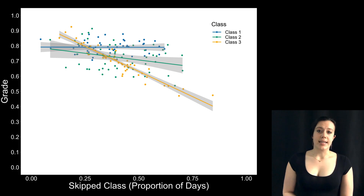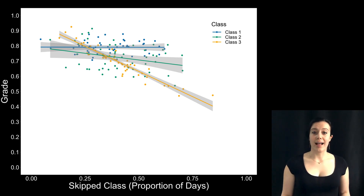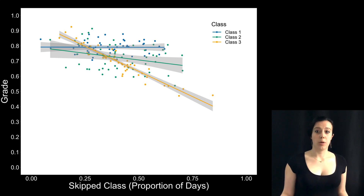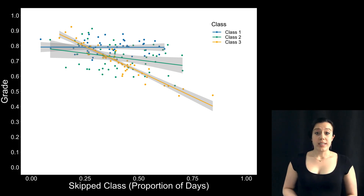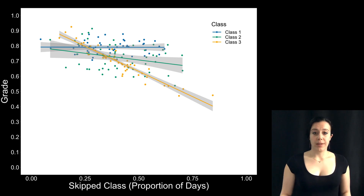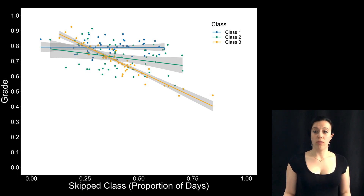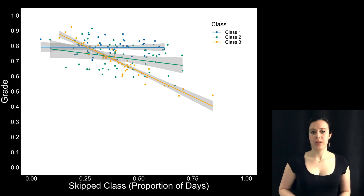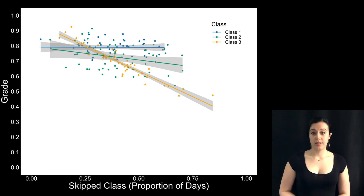In this simulated dataset, the blue points and regression line correspond to the online class where everything is made available — I'm calling that class one. The yellow points and line correspond to the in-person class where nothing's available after the fact — class three. The green points and line come from a class that falls between those two extremes. Grades are not related to attendance for class one, but they're super related for class three. So ignoring which class the data came from and using that overall regression line paints an incomplete picture, and we're losing important information about the variation between classes.